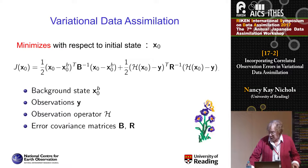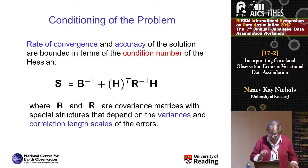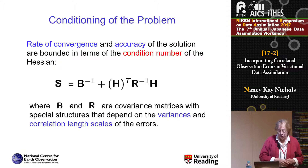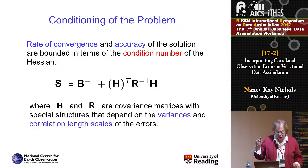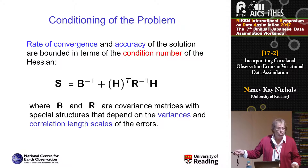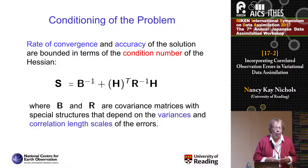The question is: what is the effect on the behavior of this system by changing R from being a diagonal matrix to including the correlations? For these optimization problems, the rate of convergence and the accuracy of the solution depend on — and are bounded by — the condition number of the problem. The condition number of an optimization problem can be shown to be essentially the conditioning of the Hessian of the optimization problem. This Hessian has a particular structure involving the B and R matrices which must be inverted, so the variances and correlation length scales of these errors turn out to have a strong influence on how well and how fast you can solve the problem.